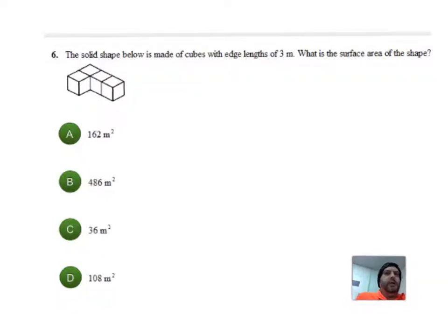With any problem, the first thing you want to do is read the problem. This says I have this solid shape below which is made of cubes with edge lengths of 3 meters. What is the surface area of the shape?